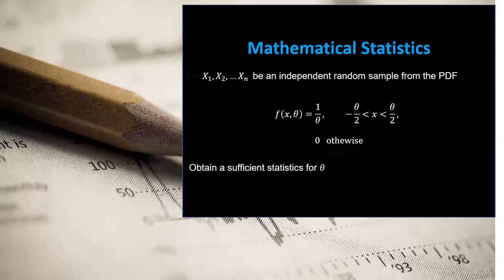Welcome to the Schuchel Mathematics Statistics Problem Solving section. Today we're going to take a look at how to find a sufficient statistic for certain parameters. Specifically, we're looking at a uniform distribution where f(x, θ) = 1/θ, and x is between -θ/2 and θ/2. So how do we find a sufficient statistic for the parameter θ here?